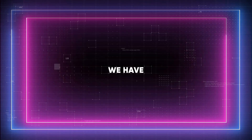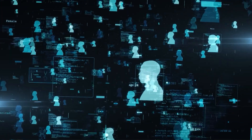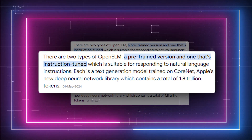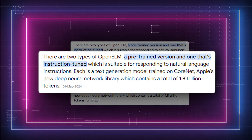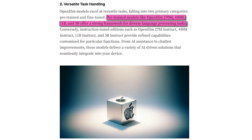On to number two, we have versatile tasks. The amazing versatility of Open ELM models is remarkable. These powerful AI systems come in two main categories: pre-trained and instruction-tuned. The pre-trained models — Open ELM 270M, Open ELM 450M, Open ELM 1.1B, and Open ELM 3B — offer a strong basis for different language processing tasks, providing a strong foundation for researchers and developers to work with.